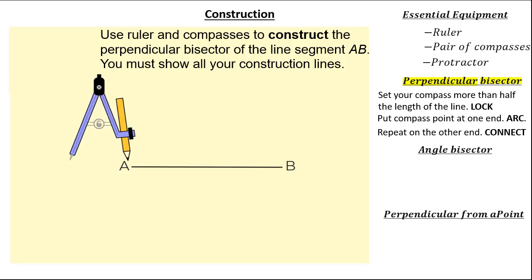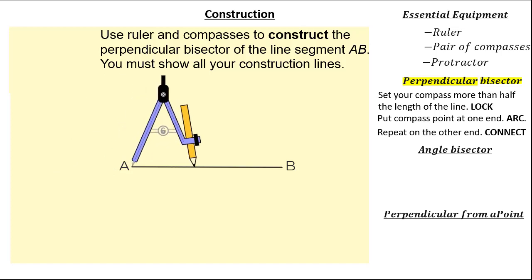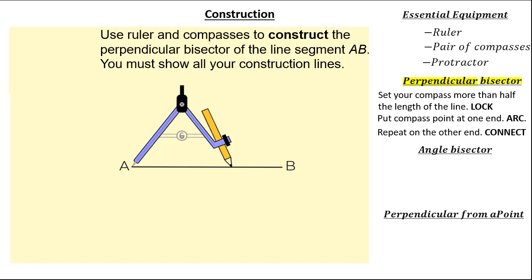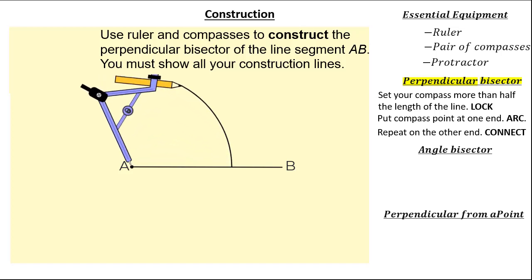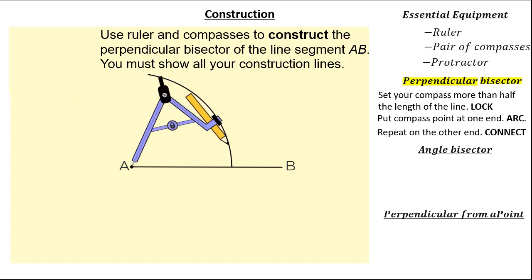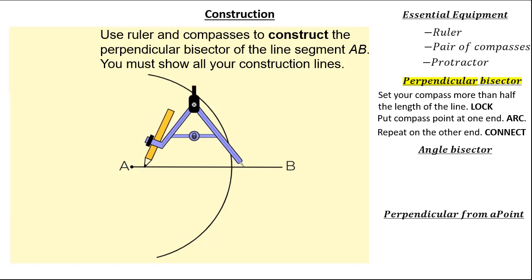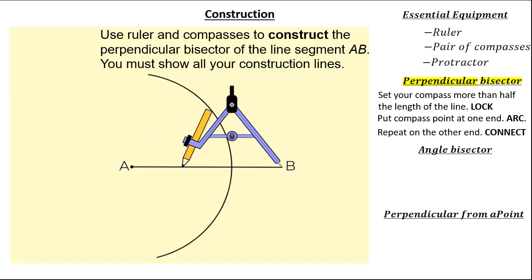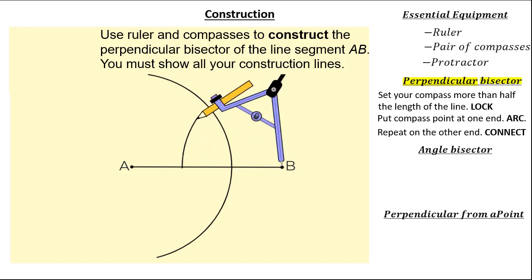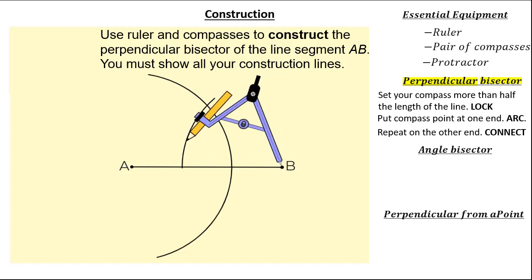Set your compass for more than half the length of the line — visually setting is enough. Once you've done that, it's important to lock your compass so you don't alter the distance between the compass point and your pencil. Then we're going to put our compass point at one end of the line and arc above and below our line segment. From here, we're going to move our compass point to the other end of the line, ensuring not to change the distance between our compass point and our pencil.